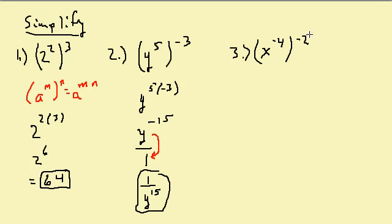Same thing here — multiply. I get x to the negative 4 times negative 2, which is going to be x to the 8th.